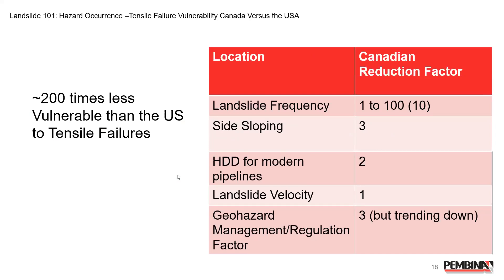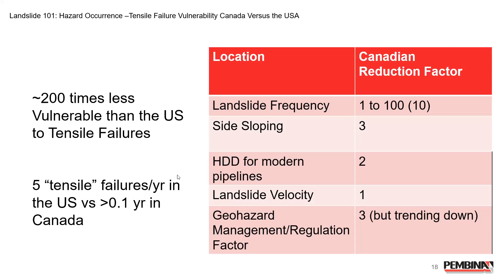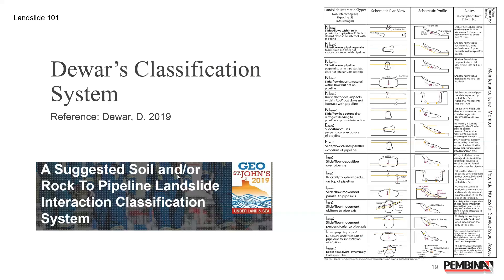I'll throw it out that Canada is about 200 times less vulnerable to tensile failures than the US. That's based on landslide frequency, occurrence of side-sloping, prevalence of HDDs, and landslide velocities being about the same. From a geohazard management point of view, programs in Canada tend to be more mature — PHMSA only realized landslides were a big issue in 2019. That said, this number is trending down rapidly. The US will have about five failures a year, while Canada's number is fairly minimal.